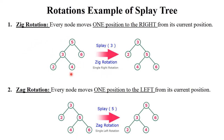The first one is zig rotation — zig means single right rotation. See here, the given binary tree: you need to perform zig rotation on node three. After performing zig rotation, node three moves to the root position. So three moves here, five moves here, and six moves here. After zig rotation this tree is generated and three becomes the root of the tree. Whichever element you perform the operation on, that element becomes the root — this is the concept of splay tree.